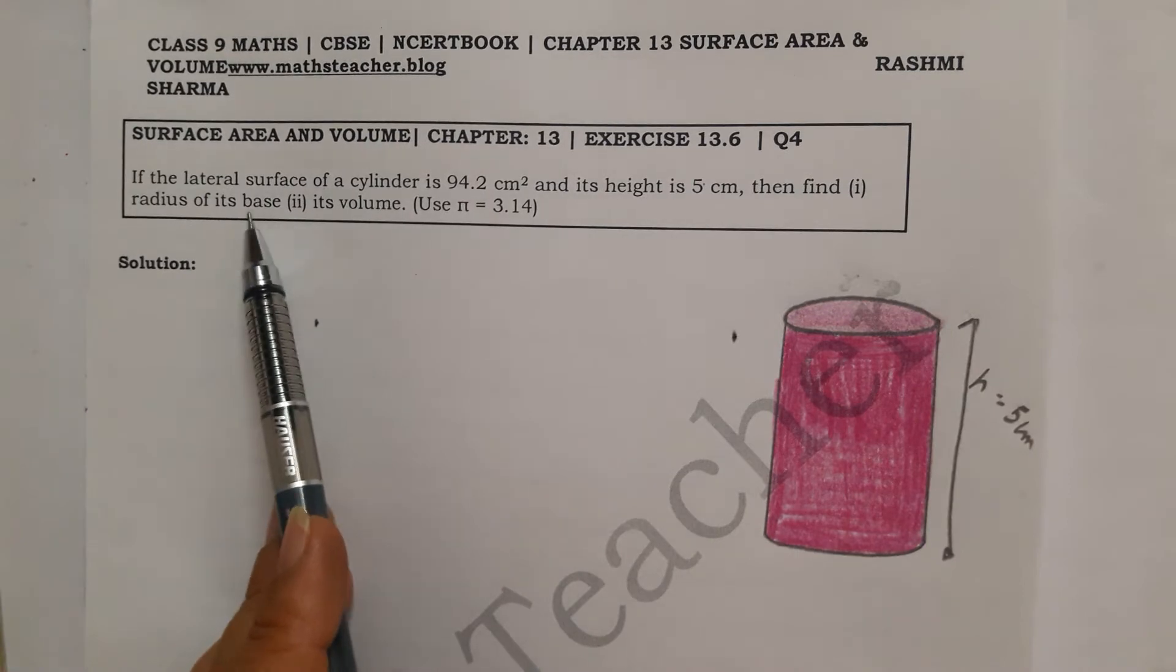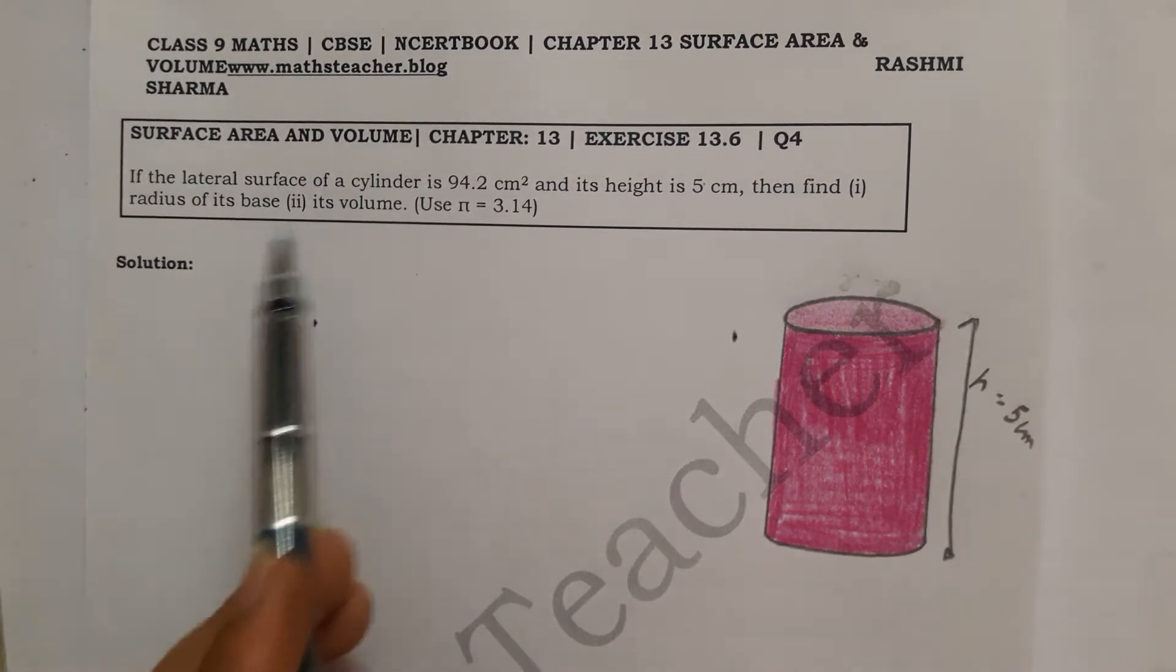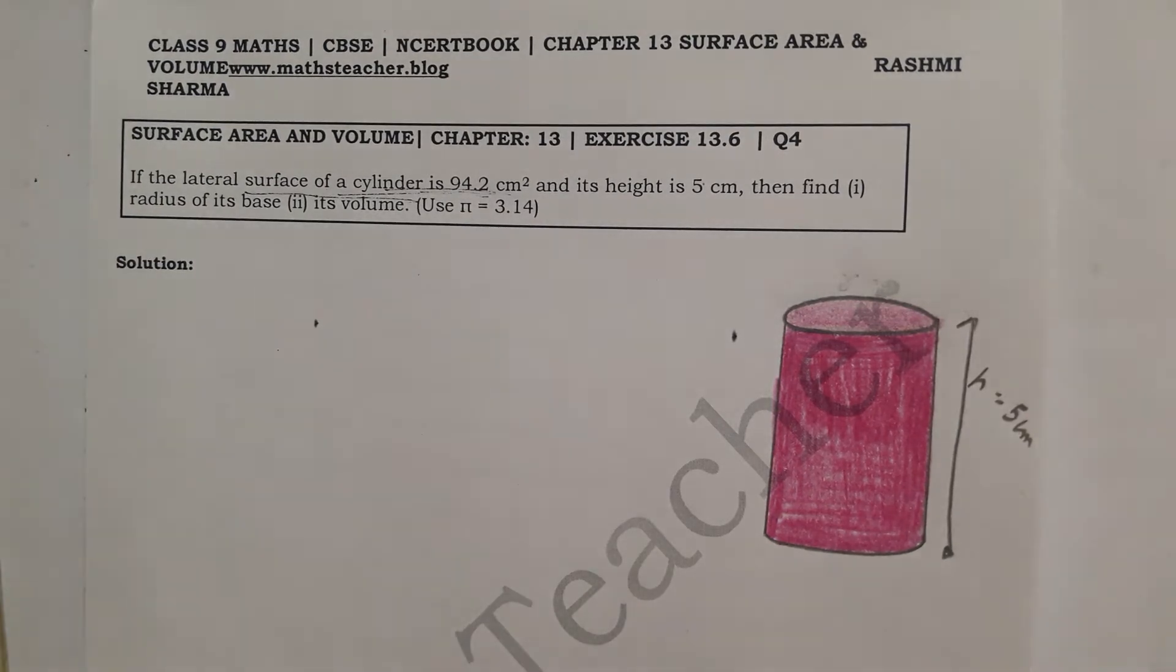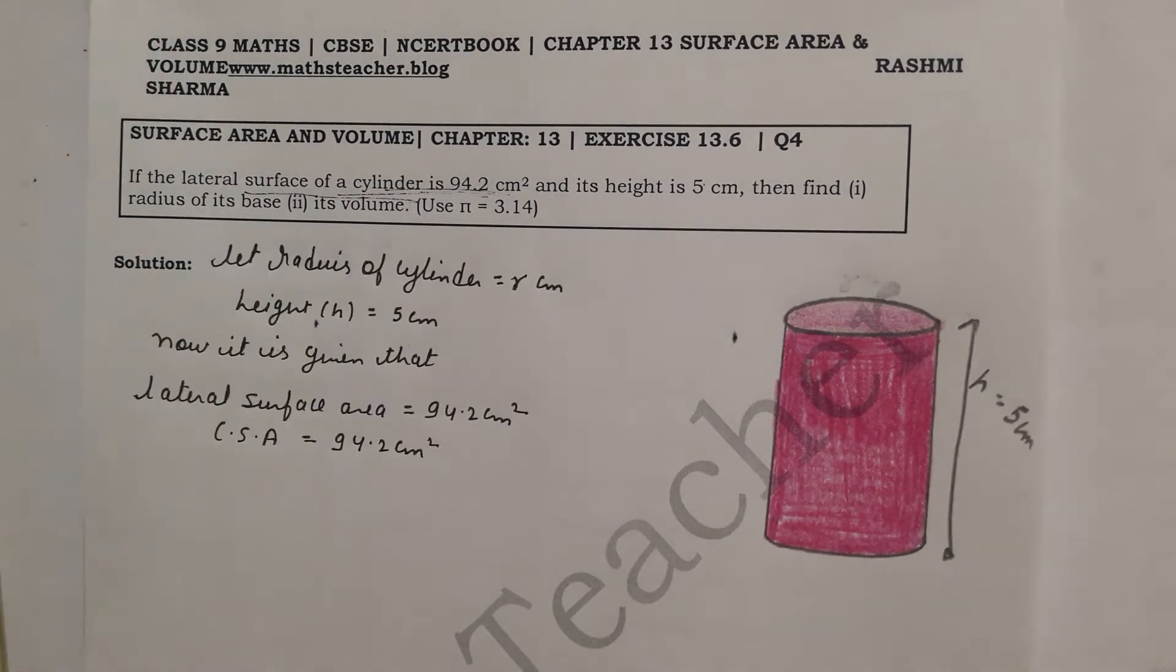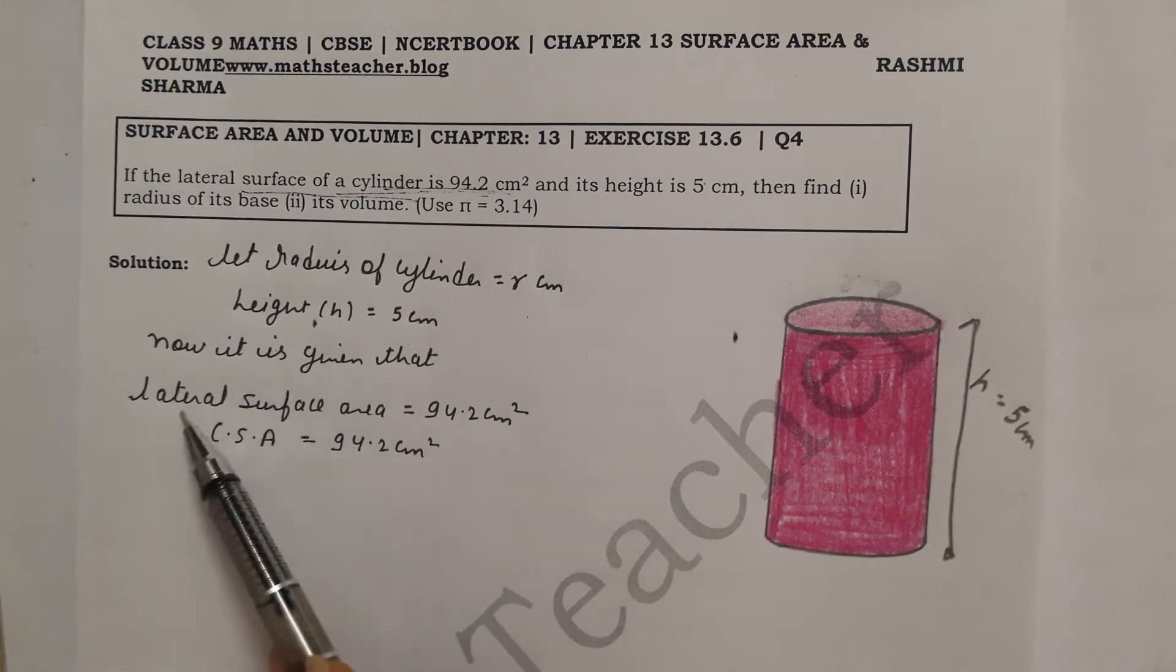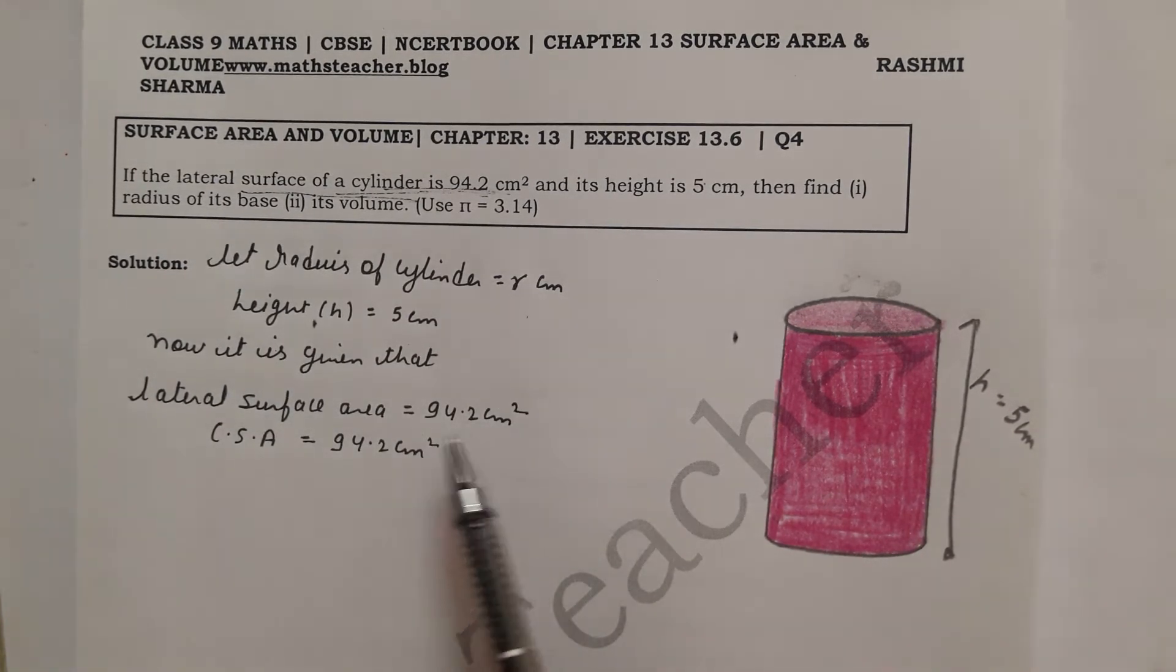radius of its base. So to find radius, which formula and hint does this question give? Lateral surface area is given, so we will find radius here. Let radius of cylinder equal r, height is given 5.